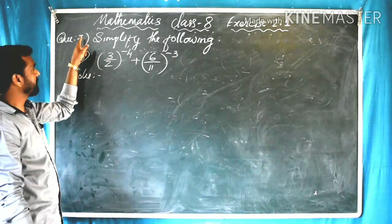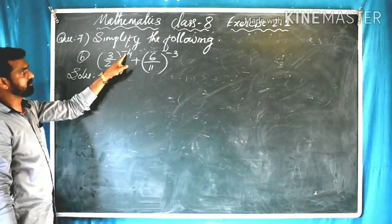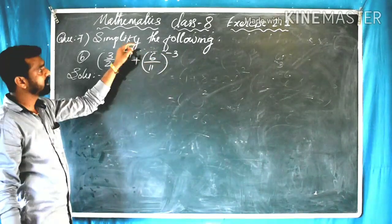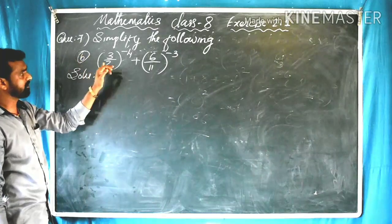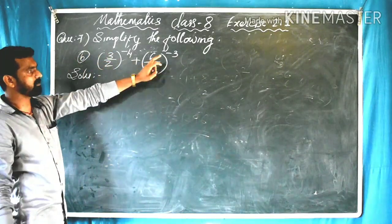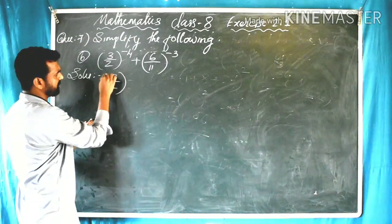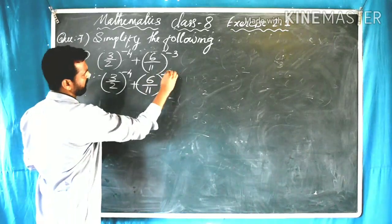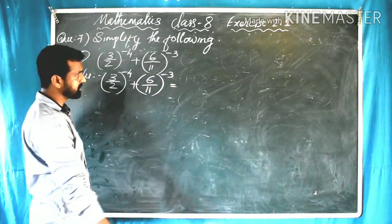Question number 7B: simplify (3/2) raised to minus 4 plus (6/11) raised to minus 3. This is the same type of simplification question. We have 3 by 2 raised to minus 4 plus 6 by 11 raised to minus 3, and we need to find its simplified value.